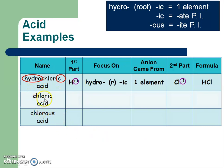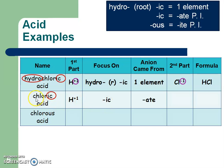Chloric acid. Again, the first part is H plus 1 no matter what. I'm going to focus on the name ending ic. Looking at my cheat sheet: if it just ends in ic, that means it came from an ate polyatomic ion — so chlorate. Looking at my ion sheet, chlorate is ClO3 with a negative 1 charge. The charge numbers are the same, so I just rewrite those parts.